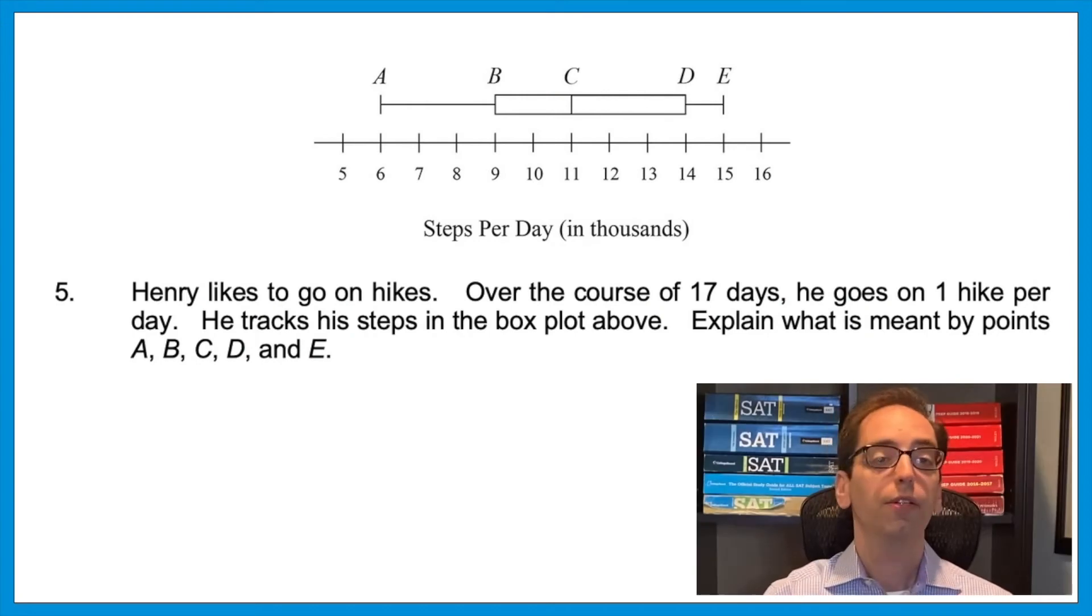And so is this next topic, box and whisker plots. And again, they are nowhere to be found in the College Board Practice Book. You won't find it. So let's look at one. Question 5: Henry likes to go on hikes. Over the course of 17 days, he goes on one hike per day. He tracks his steps in the box plot above. Explain what is meant by points A, B, C, D, and E. A box plot is a very specific way to list out a bunch of values.